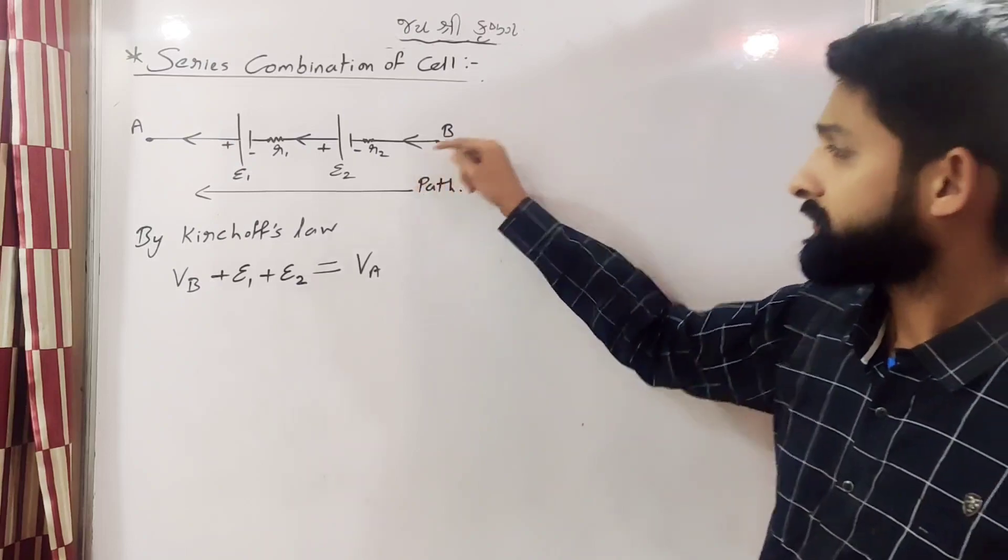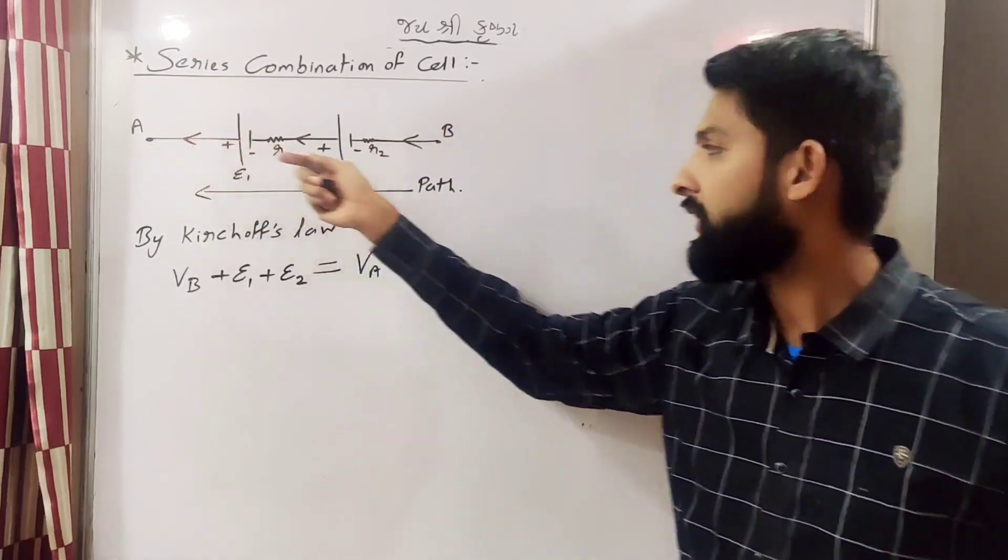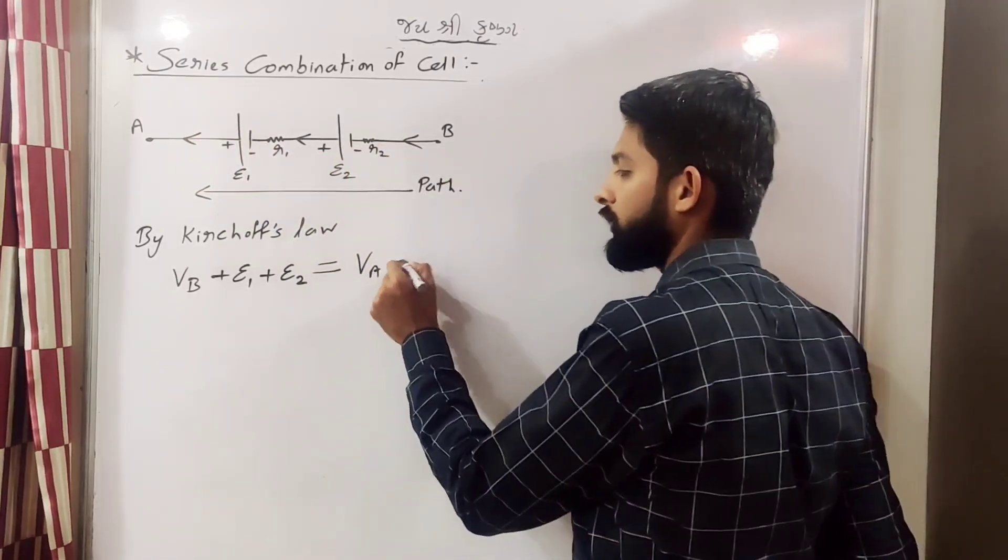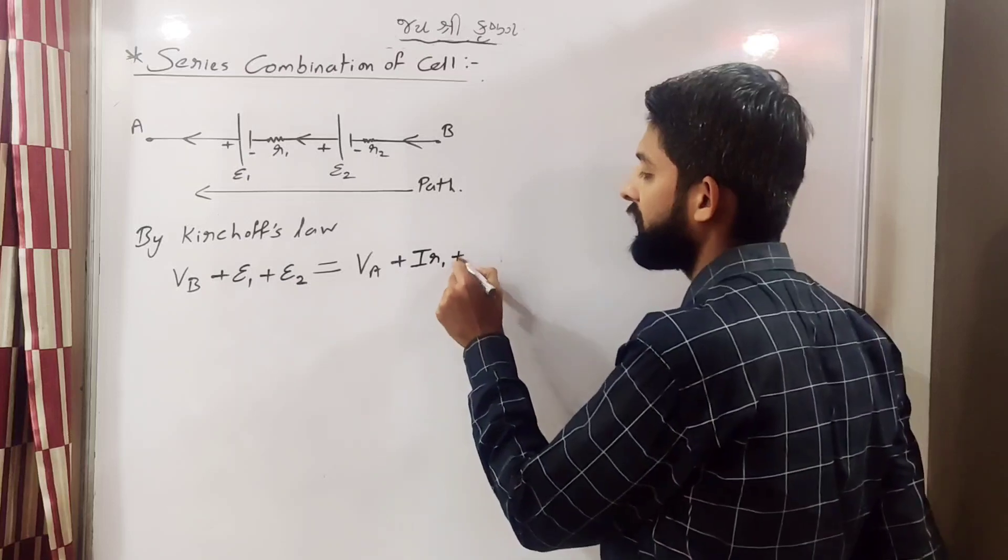Aur hum aare path mein, jo hum ne consider ki hai, usi path mein electric current flow ho raha hai, resistance ke saath. So yaha resistance hoga, IR1, aur yaha pehle IR2.